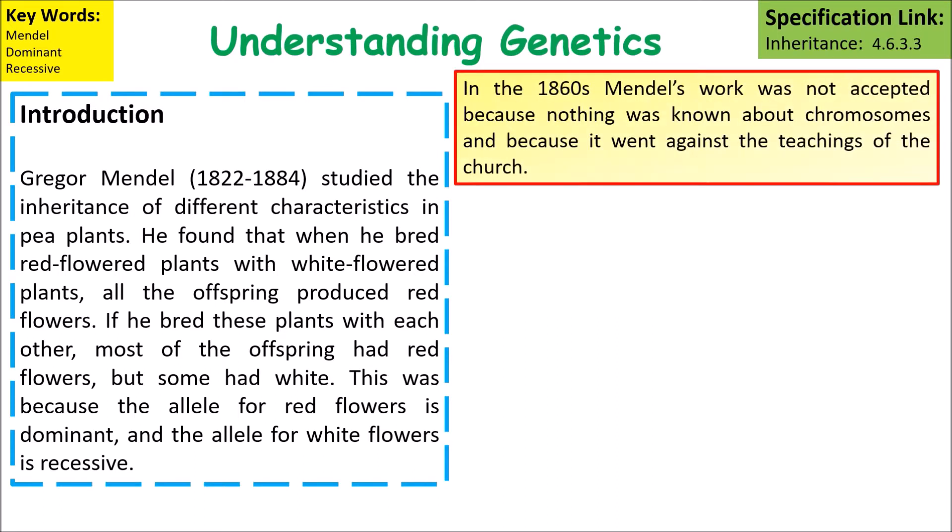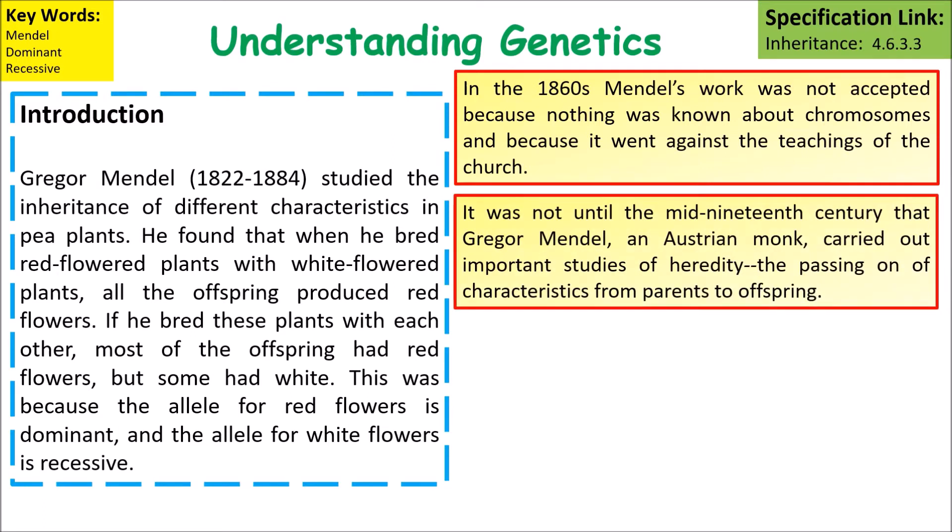In the 1860s Mendel's work was not widely accepted because nothing was known about chromosomes or genes, and it went against the teachings of the church.